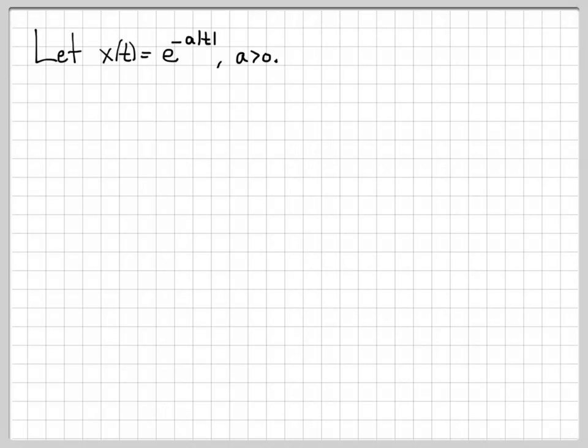The signal we're going to deal with in this problem is x(t) = e^(-a|t|) for real values of a greater than 0. If we sketch this signal as a function of time, this is what it looks like. This is basically a decaying exponential to both the left and right, so we usually call this a two-sided decaying exponential function. This is the time-domain plot.